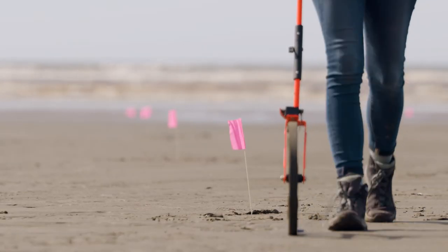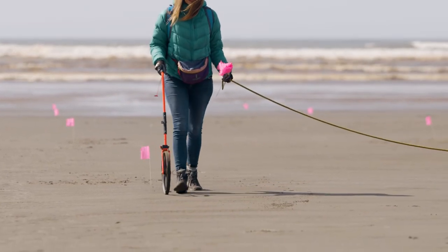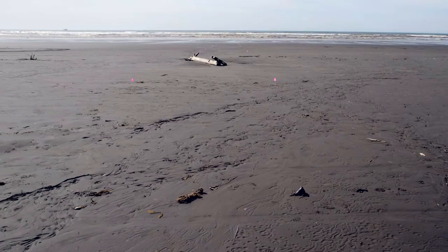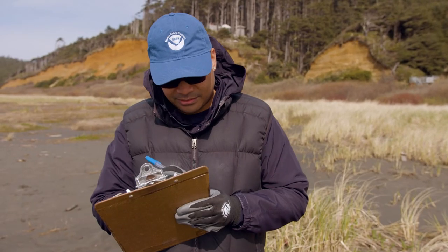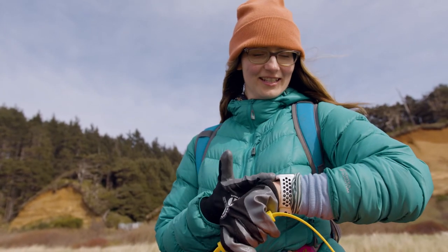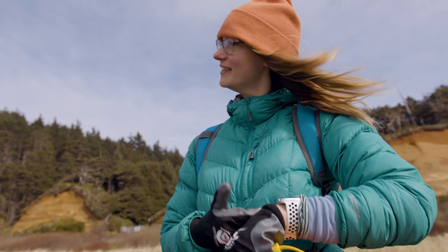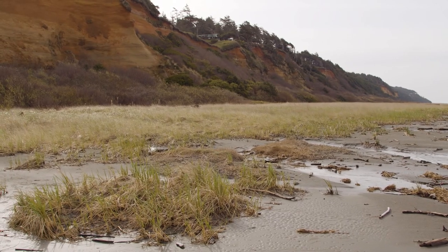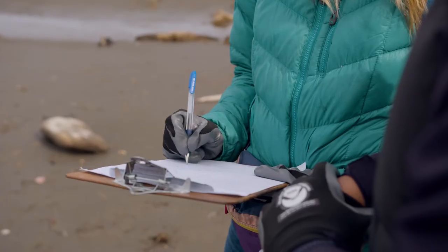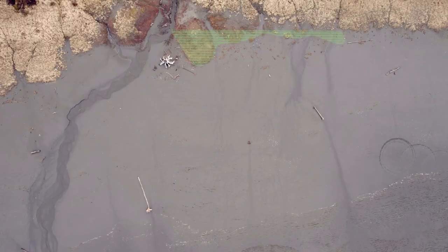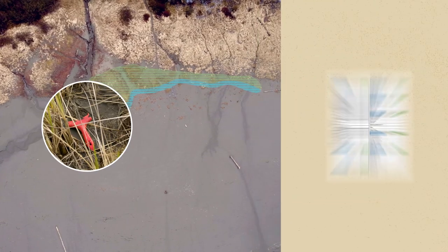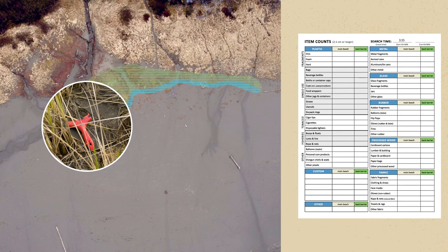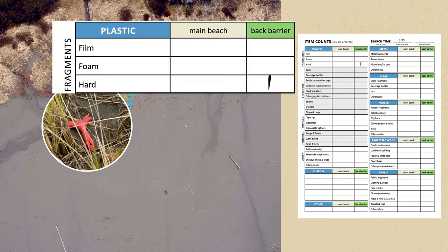Hillary uses the surveyor's wheel to measure the distance from the water to the back barrier. Once they're done, they have a clear boundary of the transect. Hillary and Michael complete the front side of the transect survey form, recording the start time. Before heading back down the transect, Hillary documents the area of vegetation forming the back barrier — she won't walk into it to avoid harming the plants, but she documents any debris from the edge to two meters into the vegetation, counting and categorizing it on the back barrier portion of the survey form.